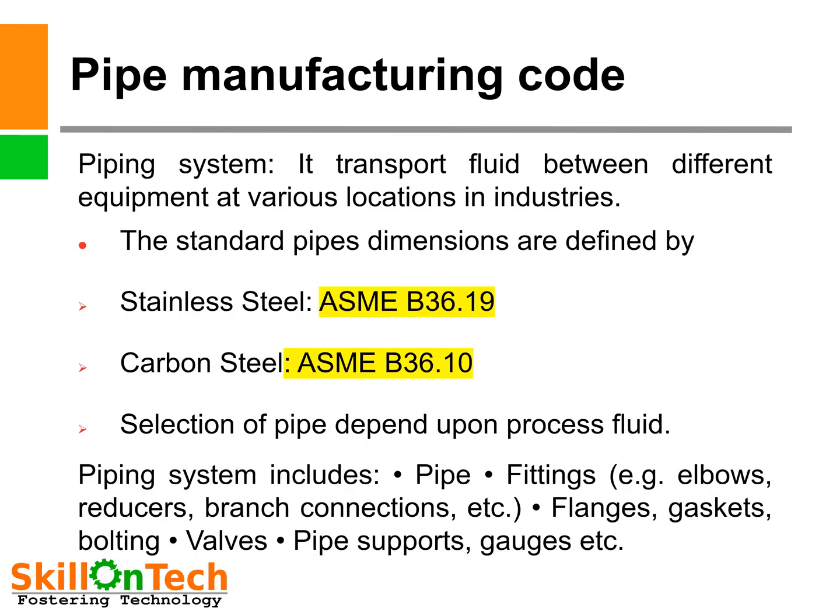Pipe manufacturing code. What is a piping system? It transports fluid between different equipment at various locations in industries. The standard pipe dimensions are defined by ASME B36.19 for stainless steel and ASME B36.10 for carbon steel. Selection of pipe depends upon the process fluid, therefore we must select pipes as per application.